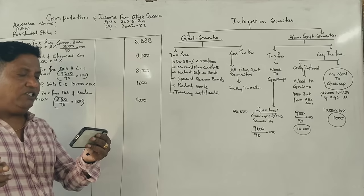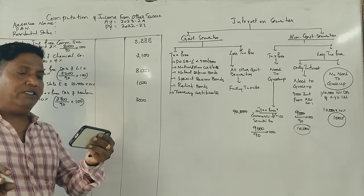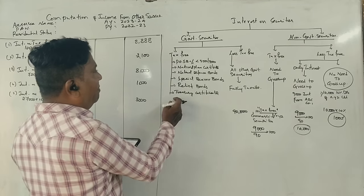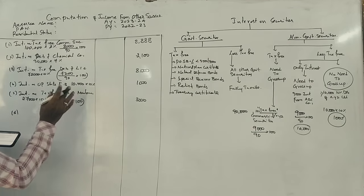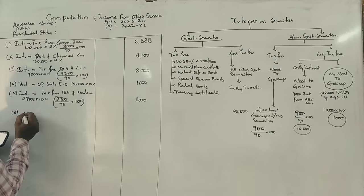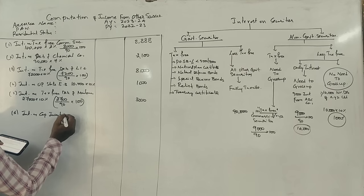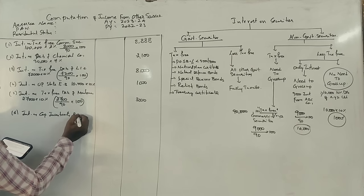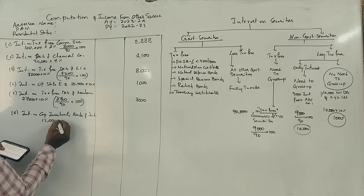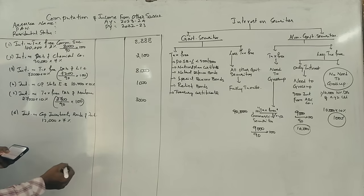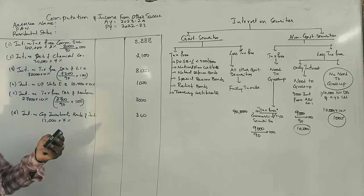Interest on Rs. 12,000, 7% Capital Investment Bonds of Government of India. Interest on capital investment bonds of India: 12,000 into 7% equals Rs. 840.